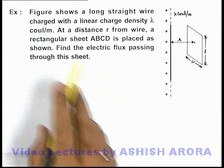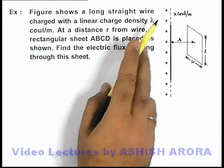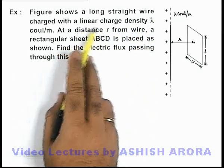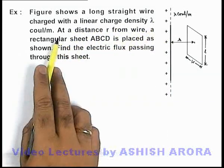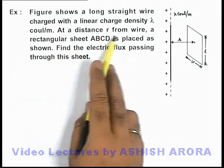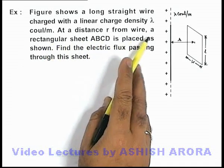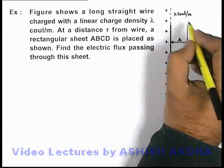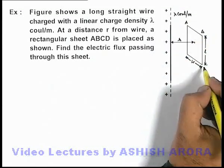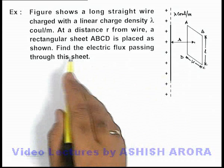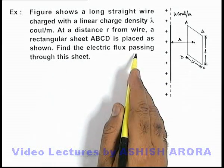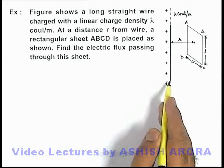In this example we are given that a figure shows a long straight wire which is charged with a linear charge density lambda coulomb per meter. And at a distance r from the wire, a rectangular sheet ABCD, this is the sheet ABCD which is placed as we can see in the figure, and we are required to find the electric flux passing through the sheet due to this wire.